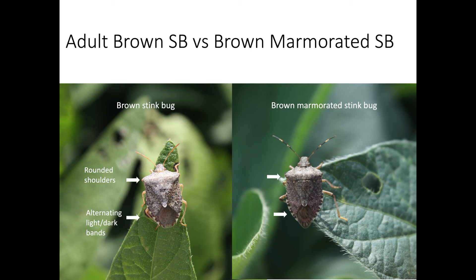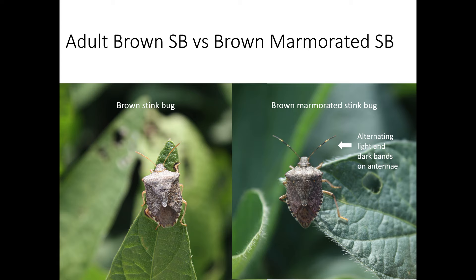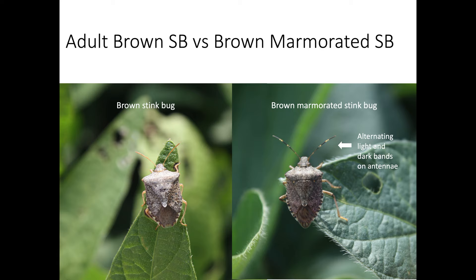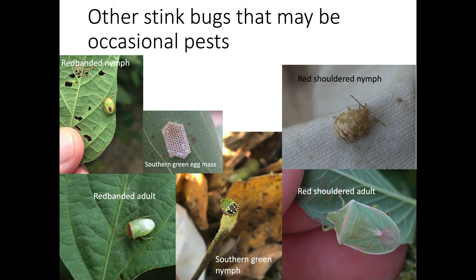The brown marmorated stink bug adult looks similar to the brown stink bug adult, as both have round shoulders and alternating dark and light bands at the margins of the abdomen. How you can tell if it's a brown marmorated stink bug is that it will have alternating bands of light and dark color on the antennae and sometimes the legs — the brown stink bug does not. Late instar immatures are black or gray in color and have noticeable white bands on the antennae and legs. The bodies look rather thin and flat, and they also have spines along the shoulders.